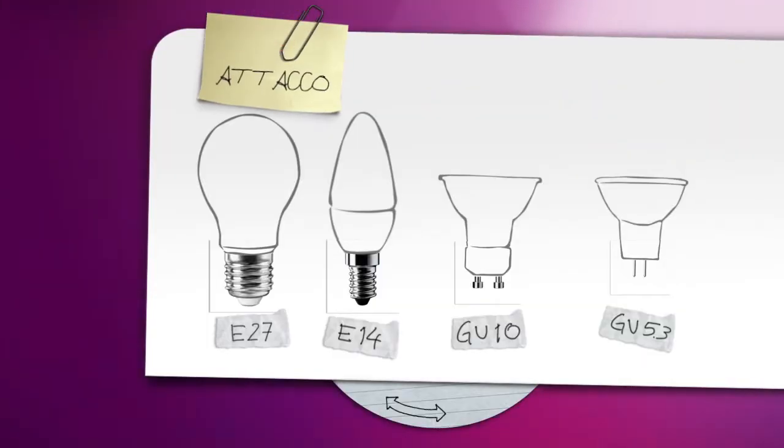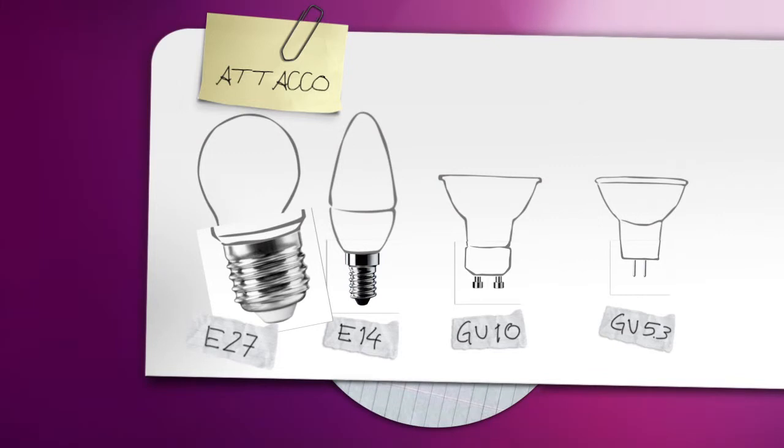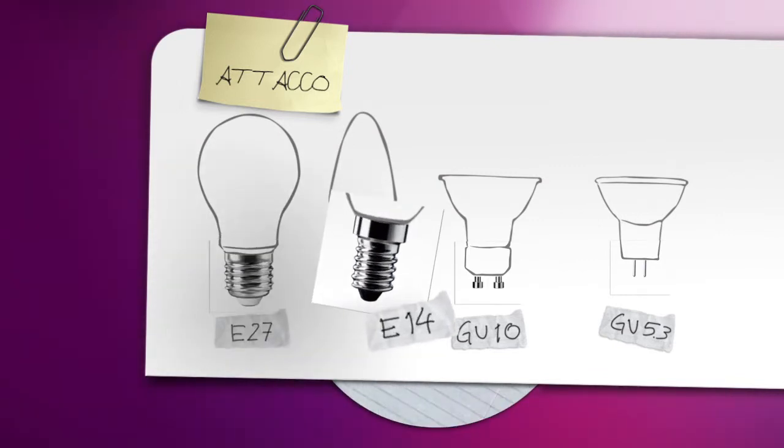Let's start with the cap. The cap is the part of the bulb that connects into the light fixture. Most popular are the screw bases, the E27 for big fittings, and the E14 for small fittings like candles and lusters.